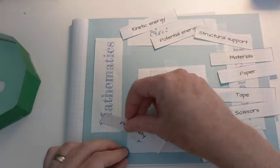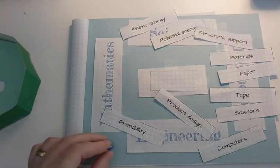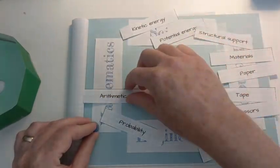Engineers measure the quality of their work with metrics, such as the probability that the marble completes the run. That brings us to mathematics.